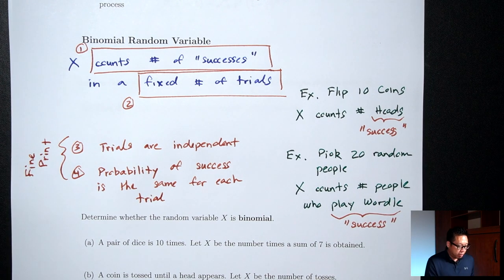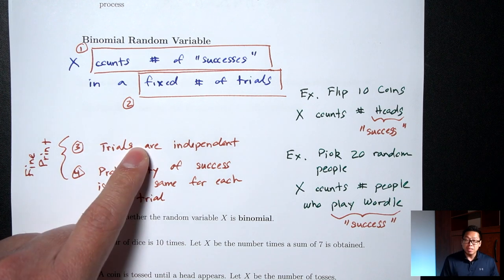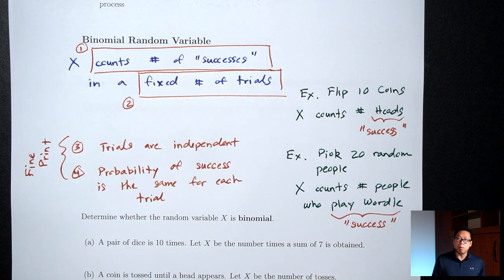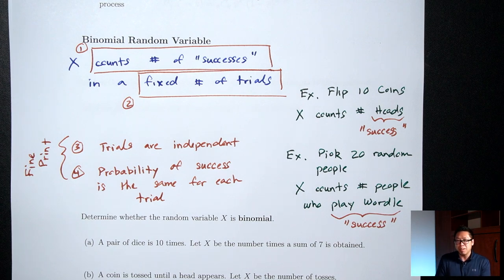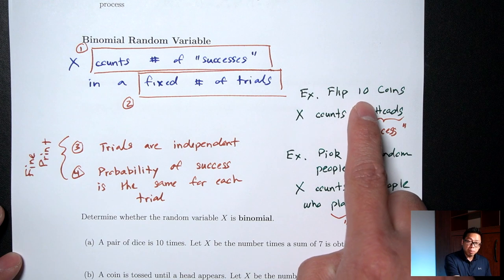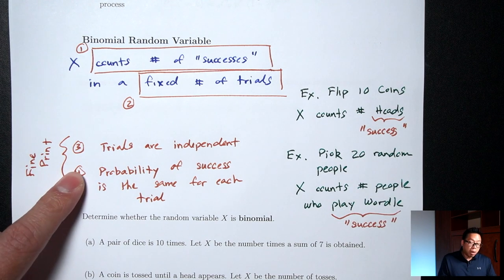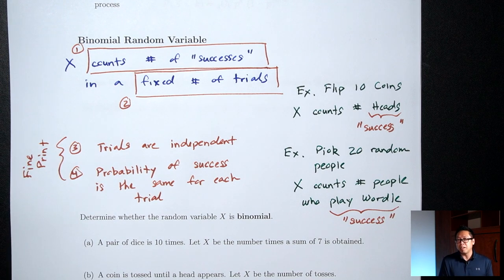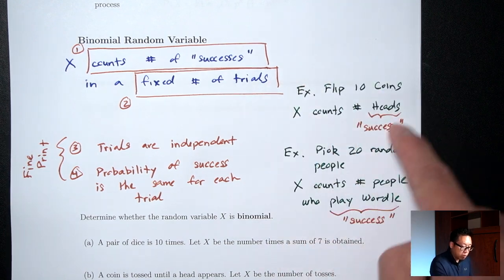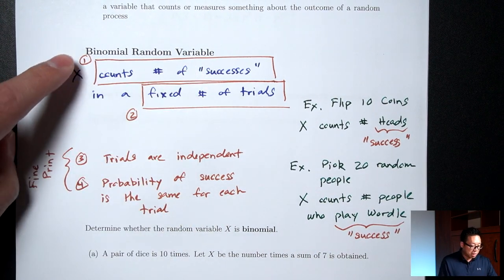For the coin example, are the trials independent? Yes, they are. Independent refers to whether one trial affects what happens on the next trial. When I flip my first coin and it lands on heads or tails, that's not going to affect what happens on the second coin. The second coin doesn't care what happened on the first. So the trials are independent. Also, each coin has a 50-50 chance of landing on heads, so the probability of success is the same for each trial. The flipping coin example satisfies all four requirements.